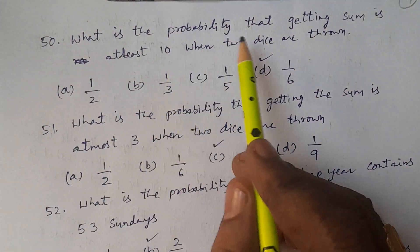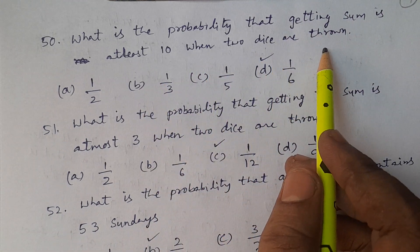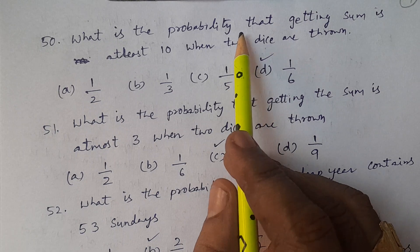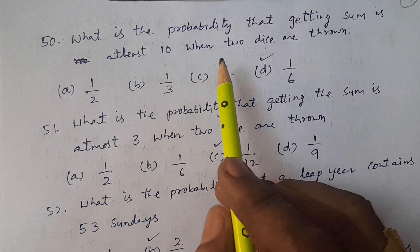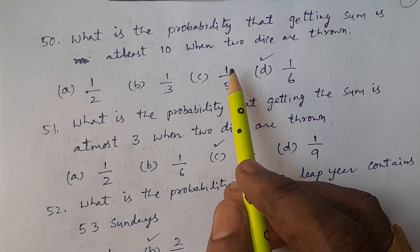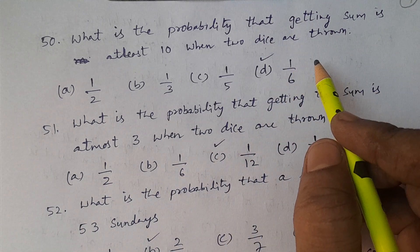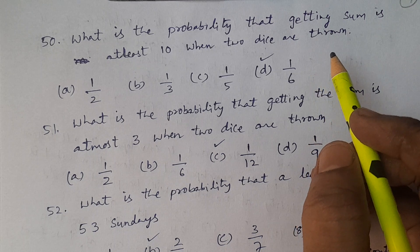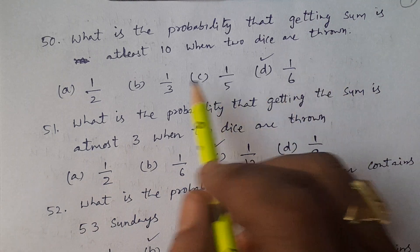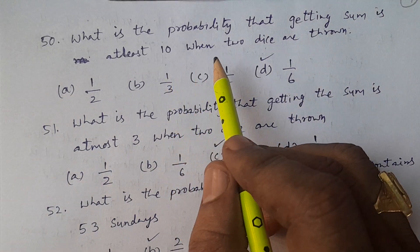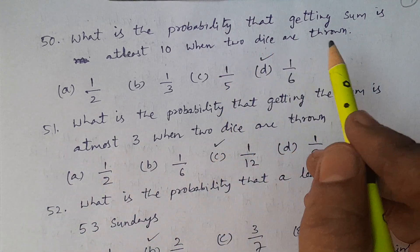Question number 50: What is the probability of getting a sum of at least 10 when two dice are thrown? At least 10 means the sum may be 10, 11, or 12, since the maximum sum is 6 plus 6, which is 12. So we can calculate directly.